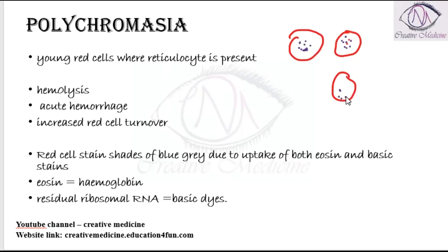In polychromasia, these younger cells are mainly seen in hemolysis, acute hemorrhage, and they are seen in increased red cell turnover rate.